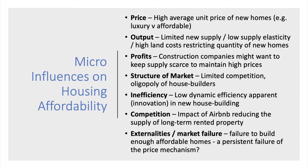Here are some key micro influences on housing affordability. One is the price aspect — the extent to which affordability is determined by the prices of new homes. Housing developers tend to favour luxury versus affordable homes, and a skew towards luxury properties drives the average price up. Another micro factor is output — whether housing supply is limited, whether we're building enough new homes, and whether the supply elasticity of homes is low, partly due to the high cost of land.